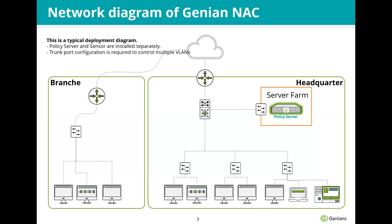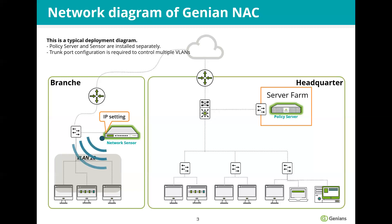Next, let's look at the network sensor. It is located in the branch office. The current branch office consists of just one network. In this case, the network sensor sets its own IP and connects to the switch. The network sensor automatically collects IP, MAC, and platform information for all devices, and sends the collected information to the Poly server. Depending on the information, the network sensor can control the device to access the network.